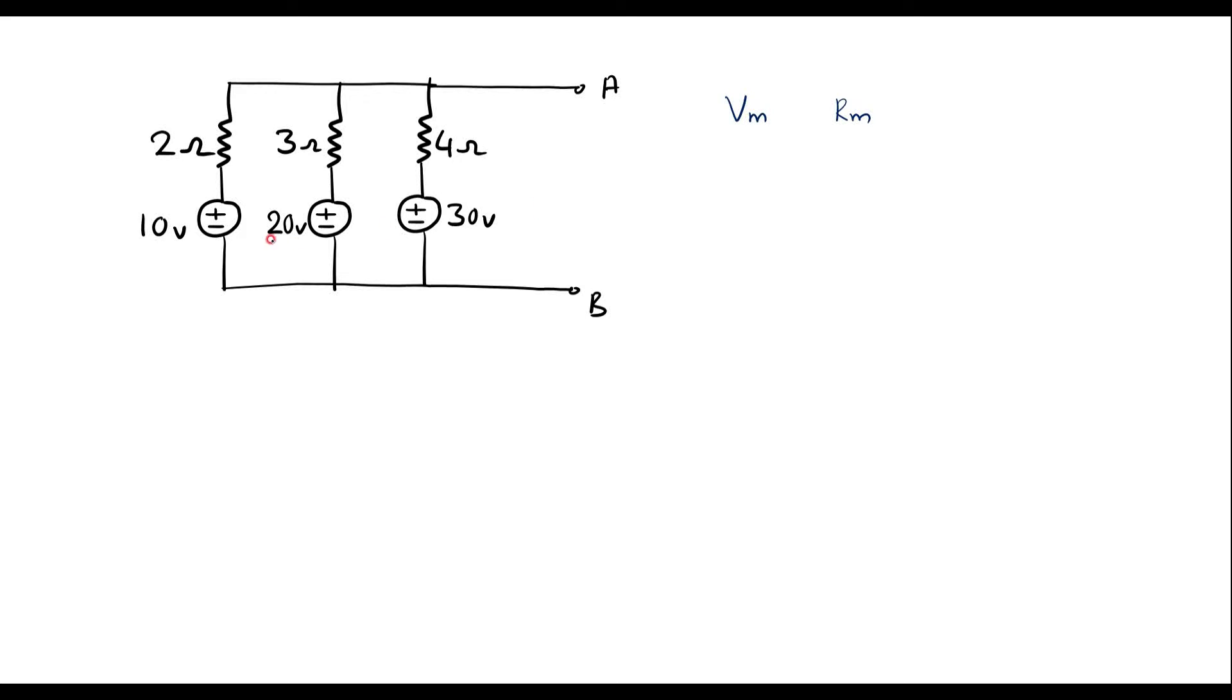In this circuit, we can observe that V1 is equal to 10 volt, and let me assume this is R1, so R1 will be equal to 2 ohm. Let me call this V2, that is V2 equal to 20 volt, and corresponding resistance R2 is 3 ohm. Here V3 is 30 volt, and corresponding resistor R3 is equal to 4 ohm.